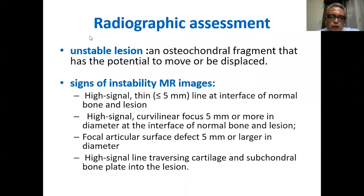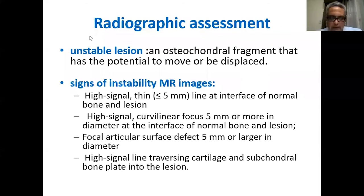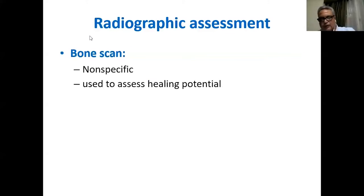On MRI assessment, you can look for signs of instability. Signs suggesting an unstable lesion include: a high-signal thin line at the interface of normal bone and the lesion; a high-signal curvilinear focus of 5 mm or more in diameter at the interface; a focal articular surface defect of 5 mm or more; and a high-signal line traversing the cartilage and subchondral bone plate into the lesion, indicating that fluid has passed through.